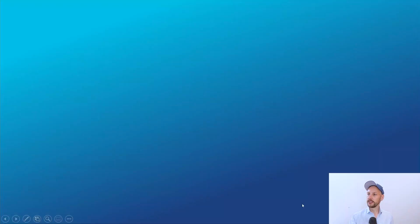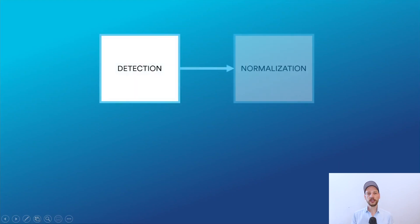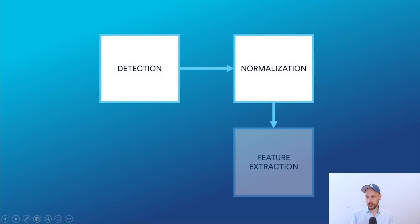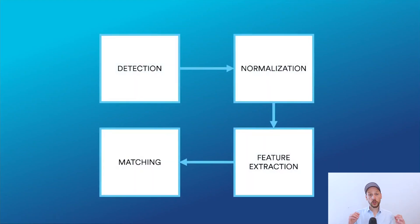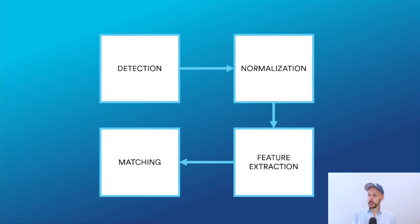When we do face recognition, we essentially perform four different steps: detection, normalization, feature extraction, and matching. It's good to understand the distinction between those four because sometimes they are confused. By understanding it better, we can also make better choices when we deploy. So let's go through each one.